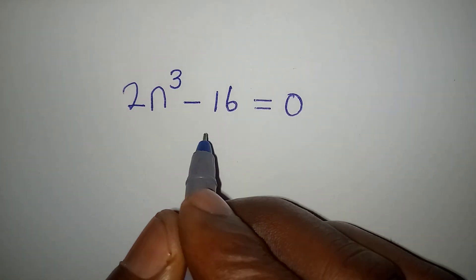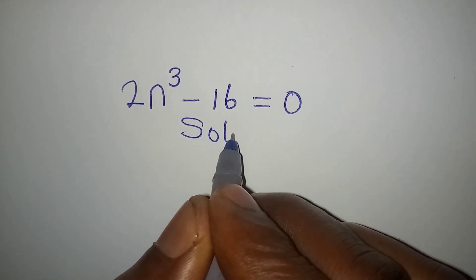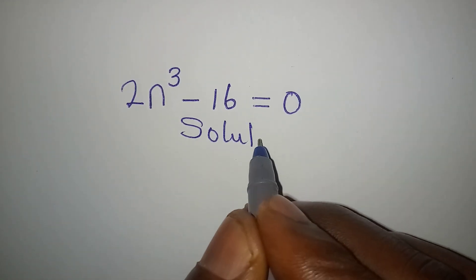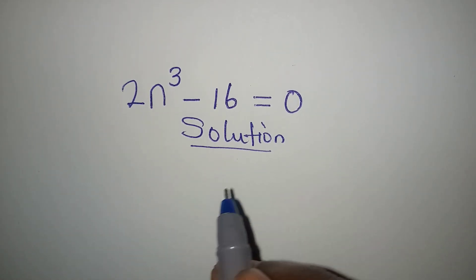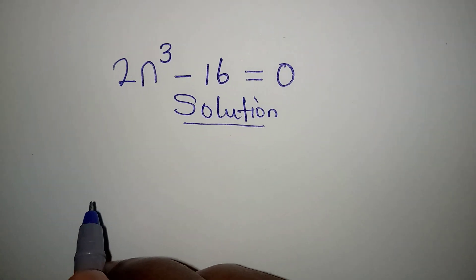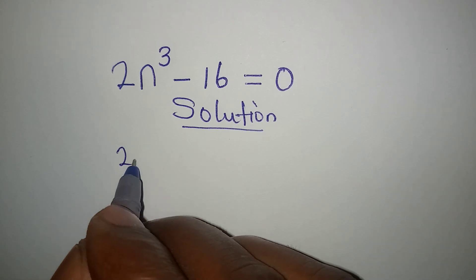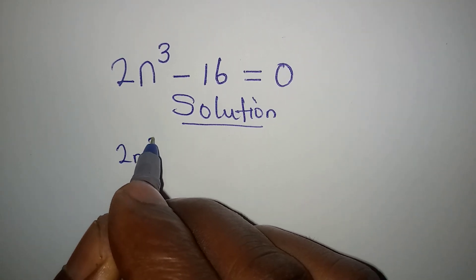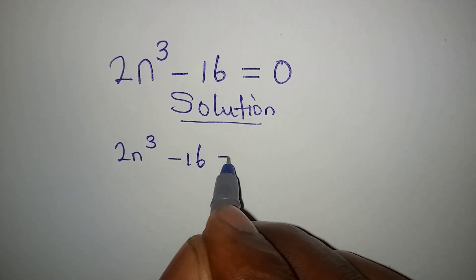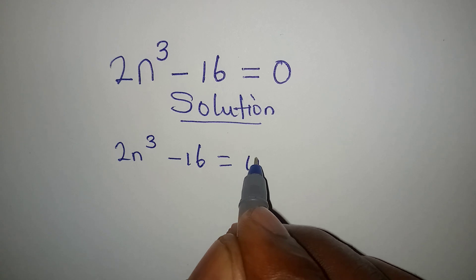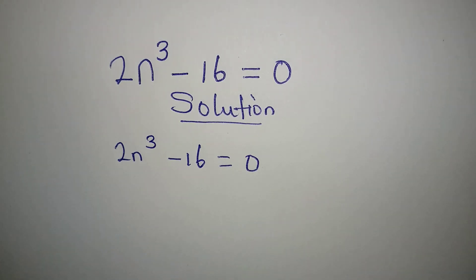Hello everyone. Let us provide the solution to this problem completely. We have 2n to the power of 3 minus 16 equal to 0.